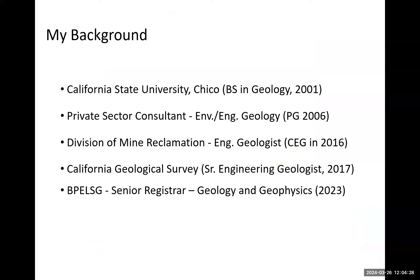A little bit about my background: I graduated with a bachelor's in geology from Chico State in 2001. Started off in private consulting doing environmental and engineering geology. Ended up getting my PG in 2006 and moved to the Division of Mine Reclamation in 2009. I did a lot of slope stability evaluations and water quality at mine sites around California. Ended up getting my CEG in 2016.